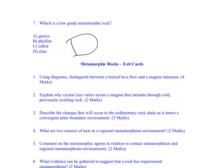Using diagrams, distinguish between a buried lava flow and a magma intrusion. Just be sure that when you draw your buried lava flow, your X's are on the bottom only. Just be sure that when you draw your magma intrusion, X's are on the top and bottom. We're going to omit number two.